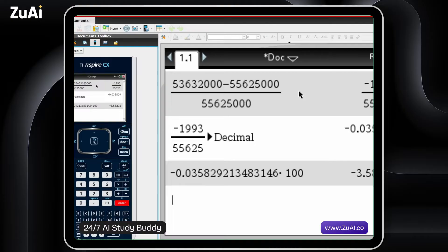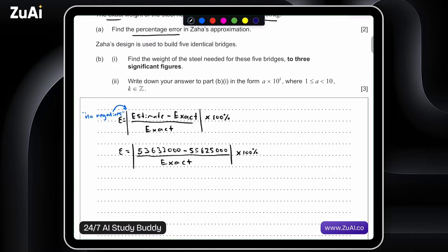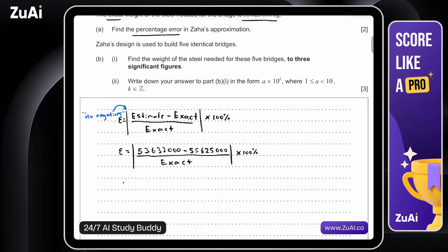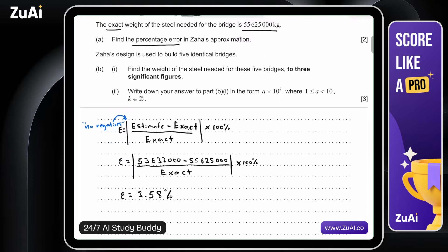Okay, so let's write this out. Percentage error is equal to 3.58% to 3 sig figs. So once again, no negatives. All right.